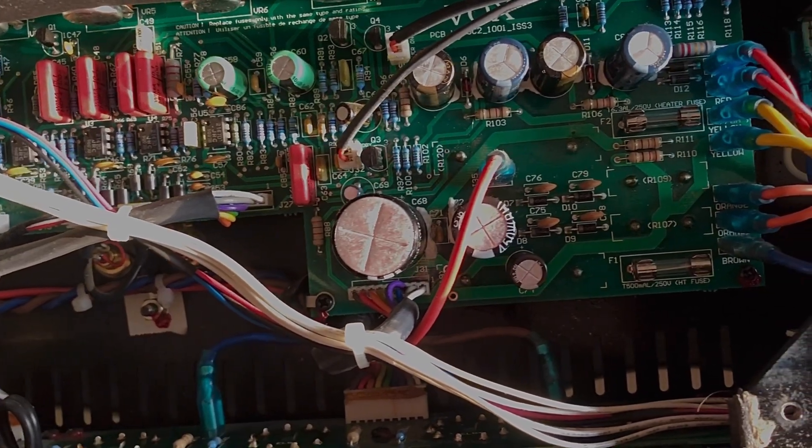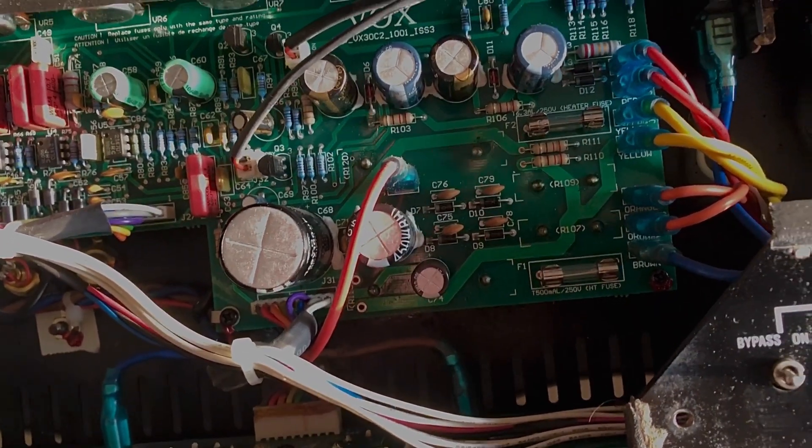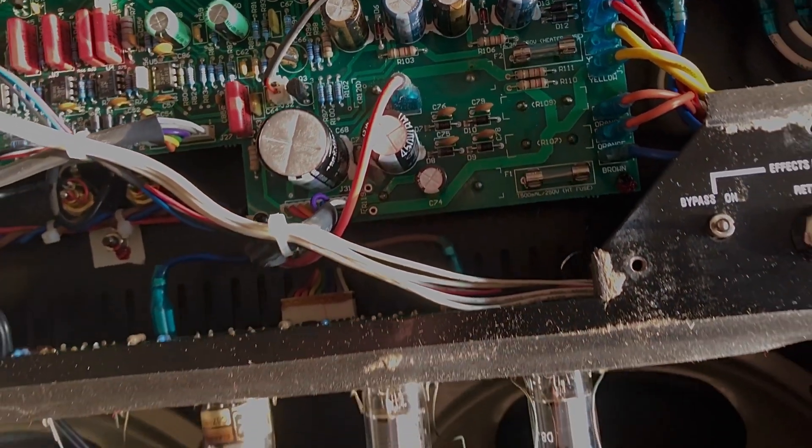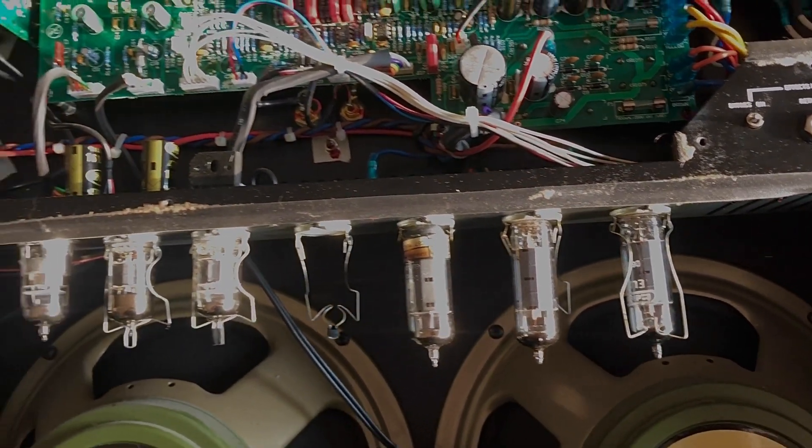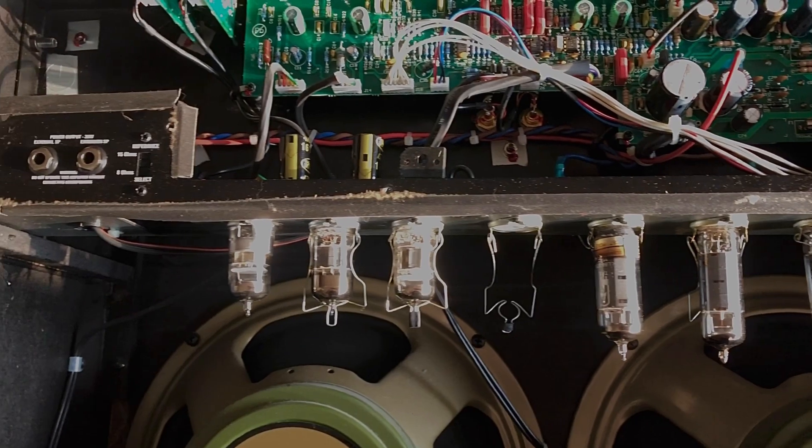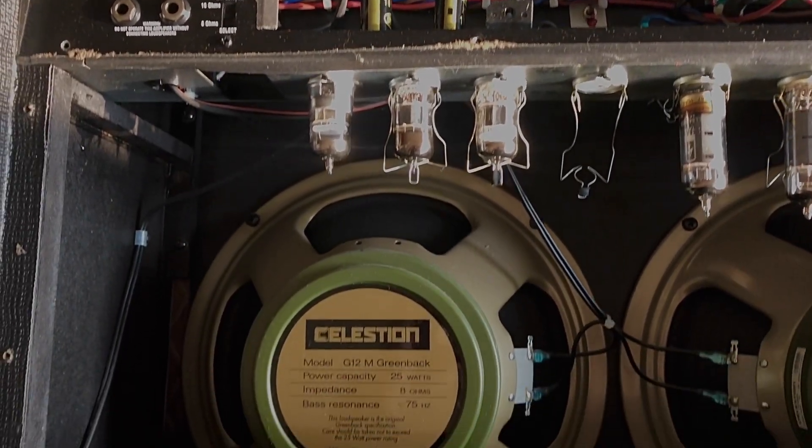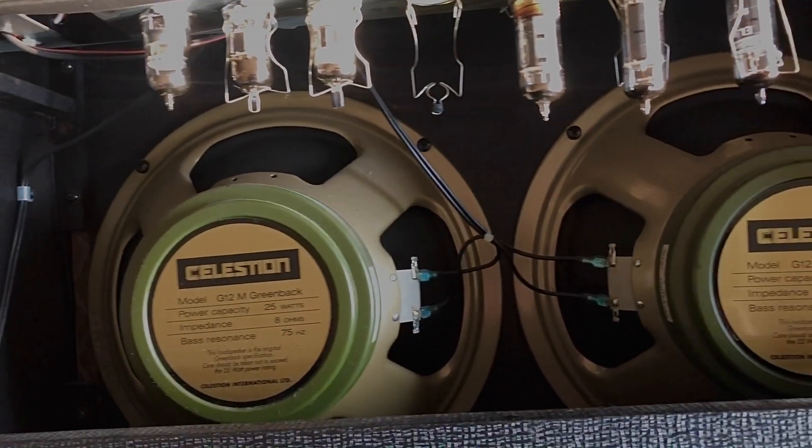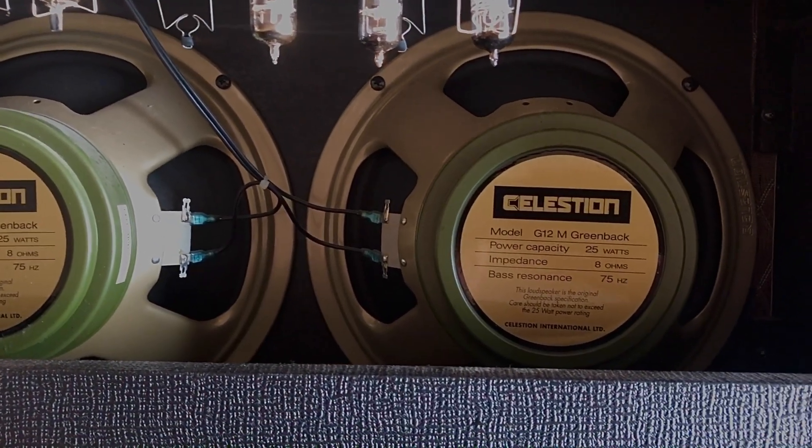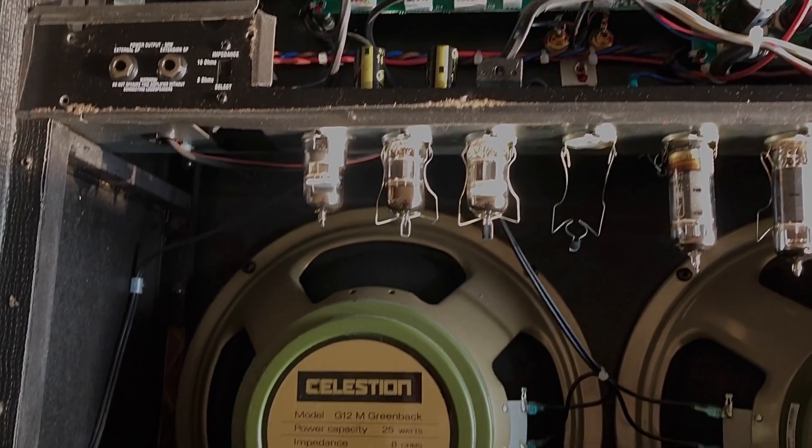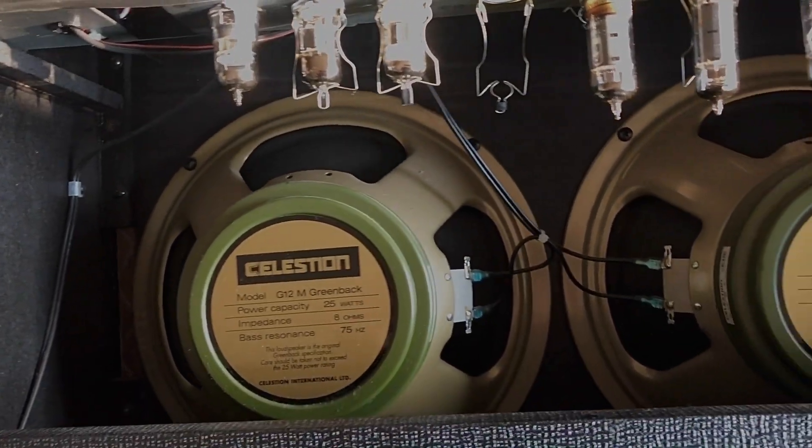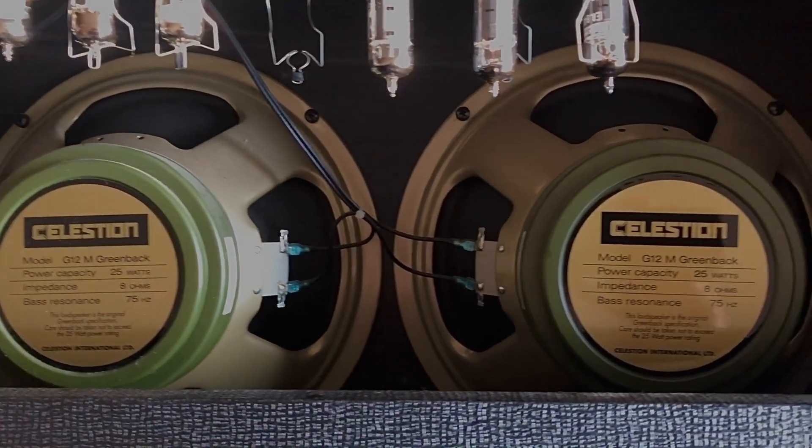transistors, operation amps, ICs. Alright and here are the tubes, oh I am sorry, the valves. 4 EL84s and 3 ECC83s also known as 12AX7s. And finally, two nice Celestion speakers, Greenbacks.